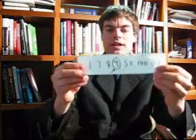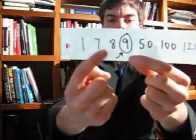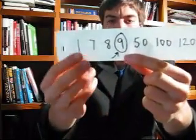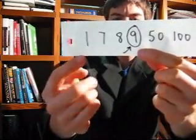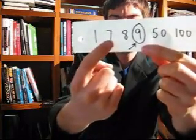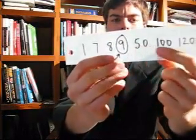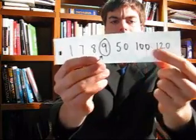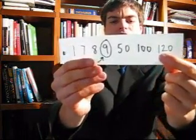Well, if we take this example, let's say we have 7 customers. Our customers' ages are 1 year old, 7 years old, 8 years old, 9 years old, 50 years old, 100 years old, and 120 years old.